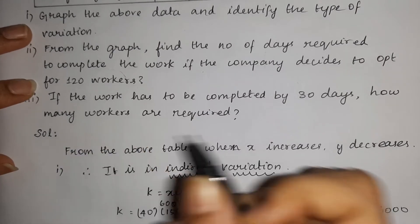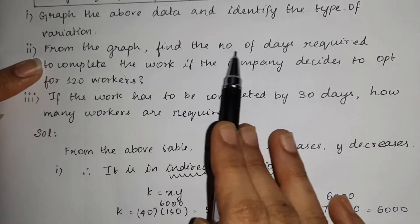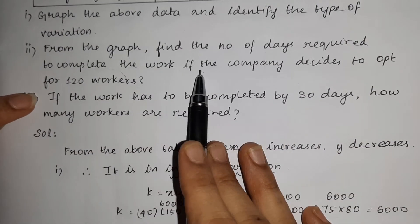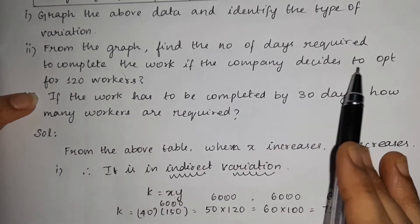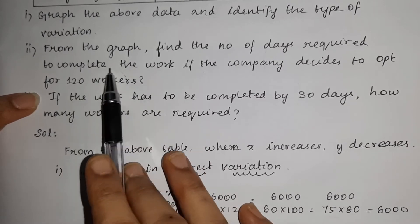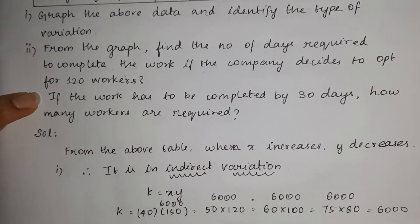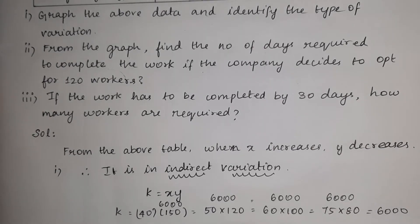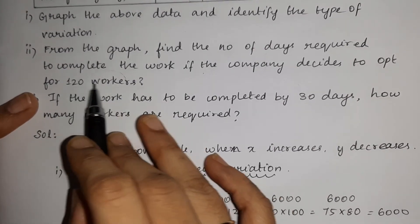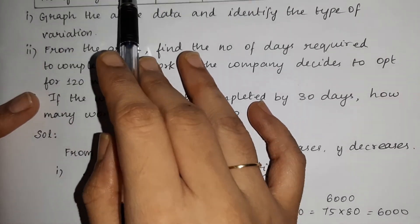So the first question is answered: graph the data and identify the type of variation — it is indirect variation. For the second question, from the graph find the number of days required to complete the work if the company decides to opt for 120 workers. The number of workers is the x value.